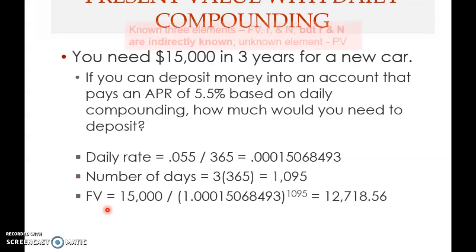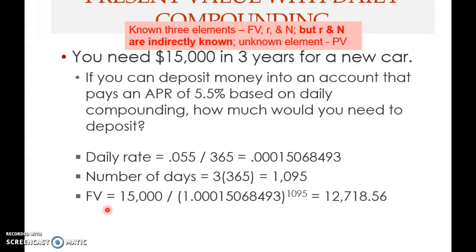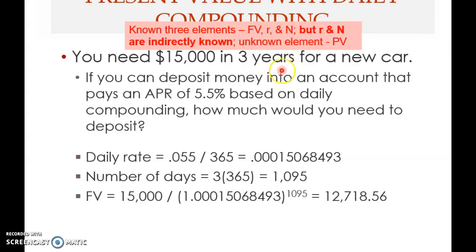Let's look at another example. This time it is not an annuity — it's only a single sum. You need $15,000 in three years for a new car. The future value is known. You can deposit money into an account that pays an APR of 5.5% based on daily compounding. The APR is given but r is not given directly — it's known but indirectly.